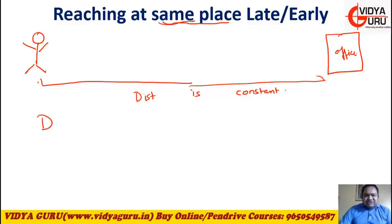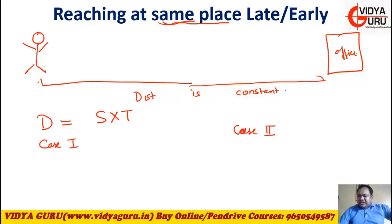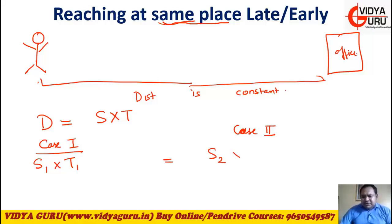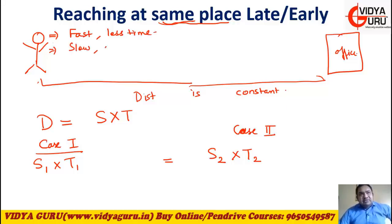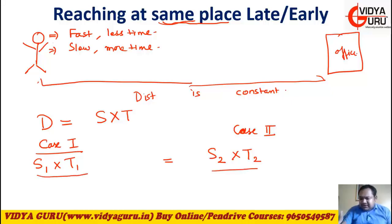When distance is constant, we know distance equals speed multiplied by time. In these questions, two cases are mentioned with different speeds. Since distance is constant, speed in case one multiplied by time in case one equals speed in case two multiplied by time in case two. In one case speed is more and the other case speed is slow. When you are fast you take less time; when running slowly you take more time. But the product of speed and time will be the same for both cases because distance is constant.